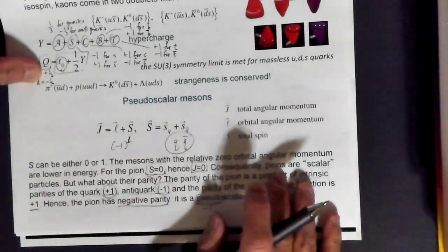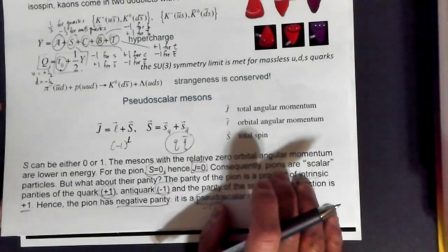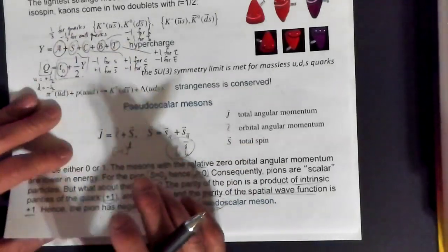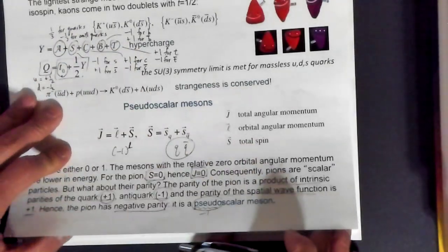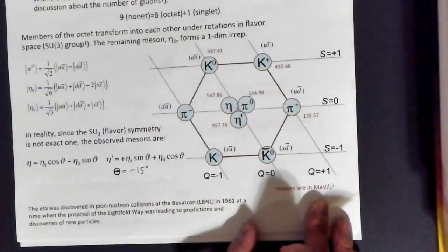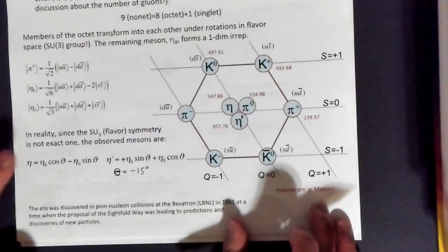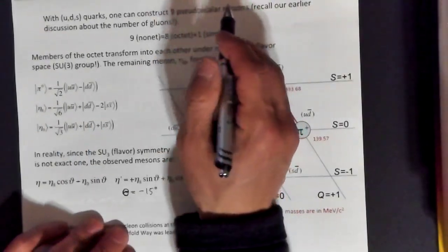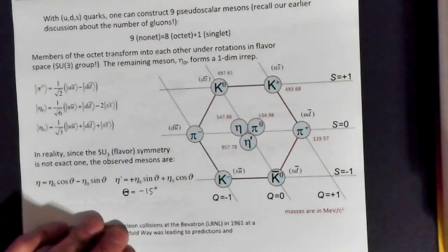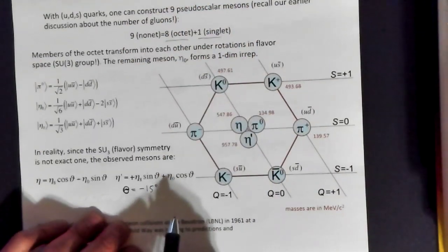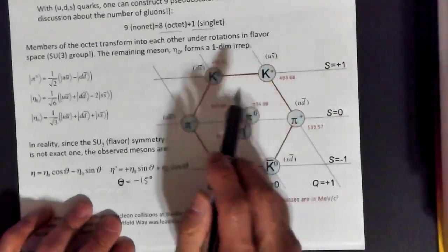These pseudo-scalar mesons happen to be the lowest-lying hadronic states — the lightest particles formed by the strong interaction. With the up, down, and strange quarks, we can construct nine pseudo-scalar mesons: three quarks times three antiquarks equals nine. As stated before, that decomposes into an octet and a singlet.